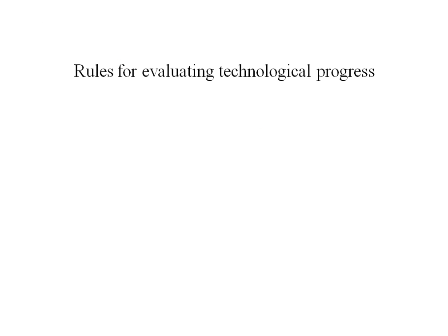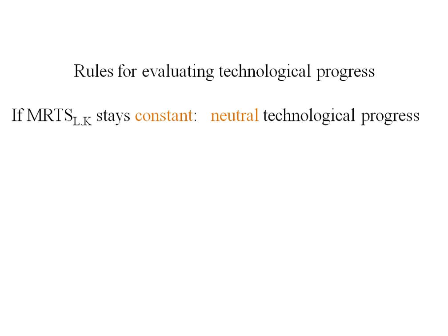So now that I know I do have technological progress, how am I going to evaluate if it's capital saving or labor saving? My rules are, if my marginal rate of technical substitution stays constant, then there's neutral technological progress.